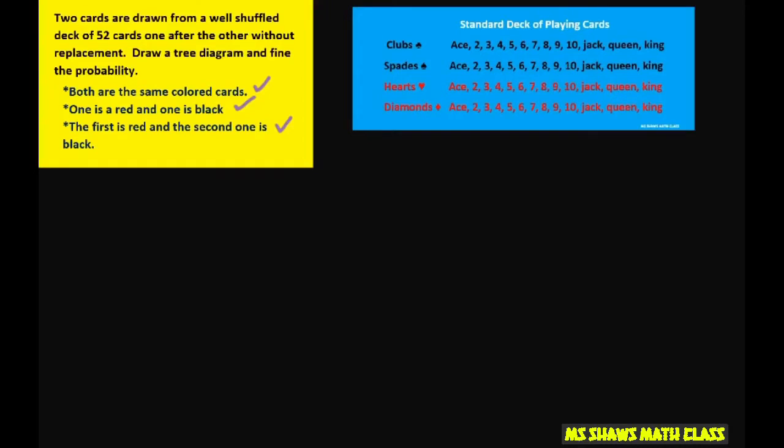But the way we want to set up the tree diagram, so we can do the first attempt, or first draw, we want red or black. And we don't put one half, we're going to put 26 out of 52. And so the black is the same, 26 out of 52.